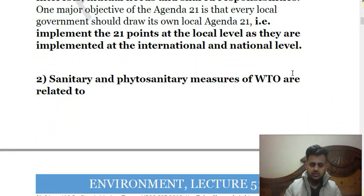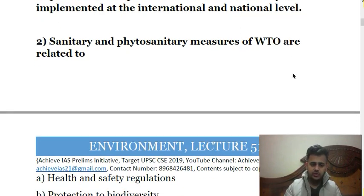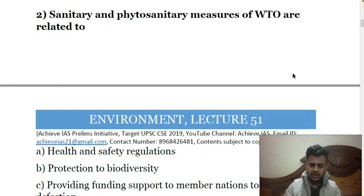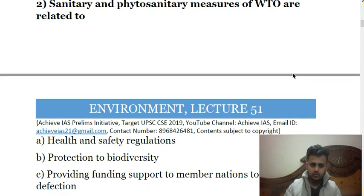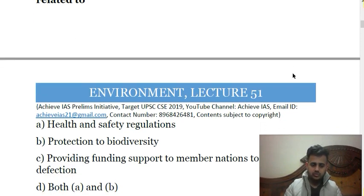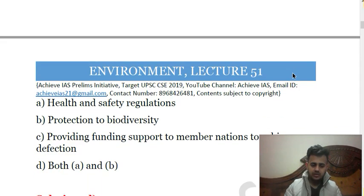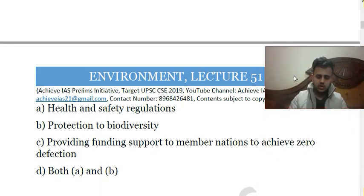The second question: Sanitary and Phytosanitary measures of WTO are related to what? There is an Agreement on Sanitary and Phytosanitary Measures — it is an international agreement of the World Trade Organization. The options are: A, health and safety regulation; B, protection to biodiversity; C, providing funding support to member nations to achieve open defecation free status; D, both A and B. The correct answer is D — both A and B. It includes health and safety regulations and the protection of biodiversity.